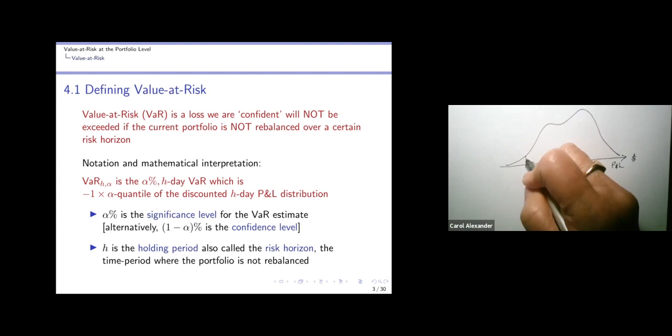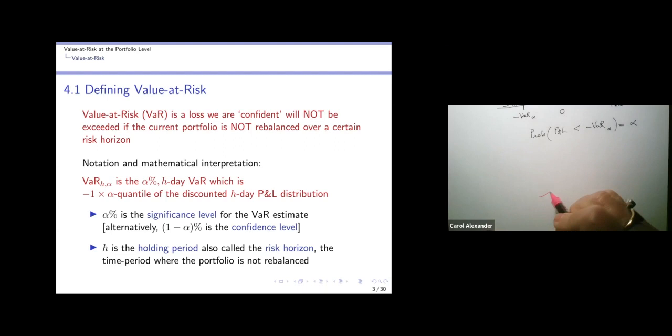Now the confidence level refers to some loss here—this is a profit, this is a loss. So if we were to take an area here of, call it alpha, then mathematically we can say that whatever this number is here, I'm going to call it minus VaR_alpha, because obviously a different alpha would be a different quantile. Another way of saying that is that the probability that the P&L is less than this number is equal to alpha.